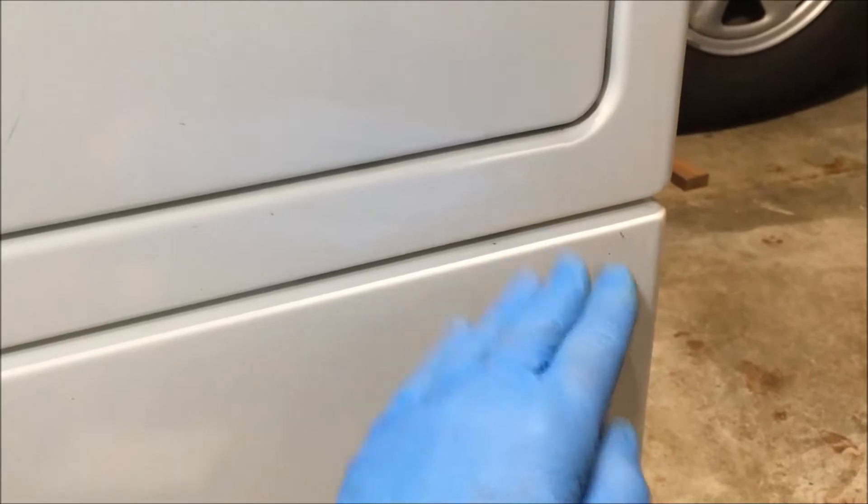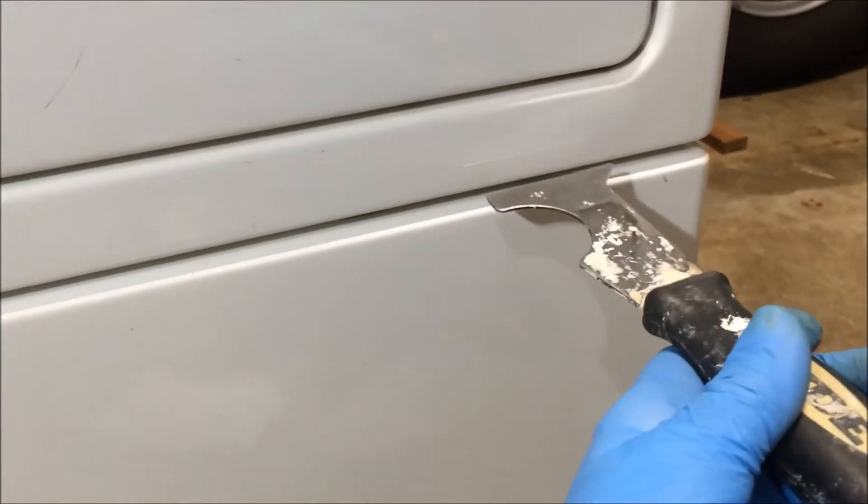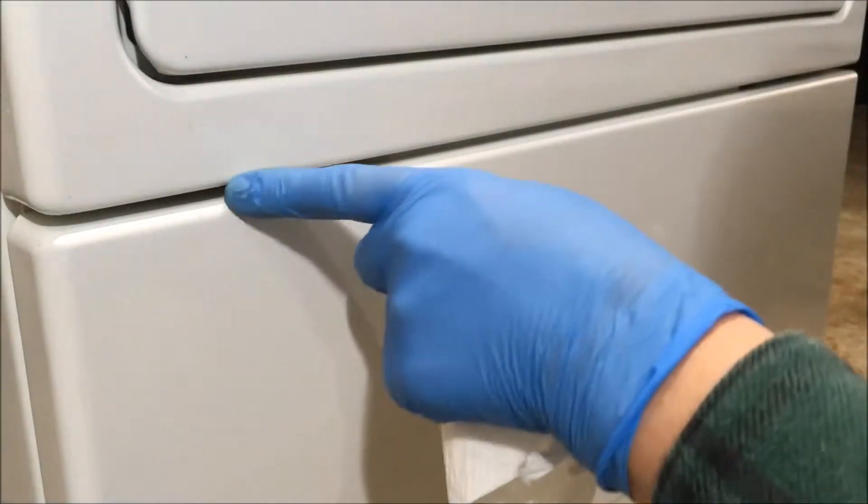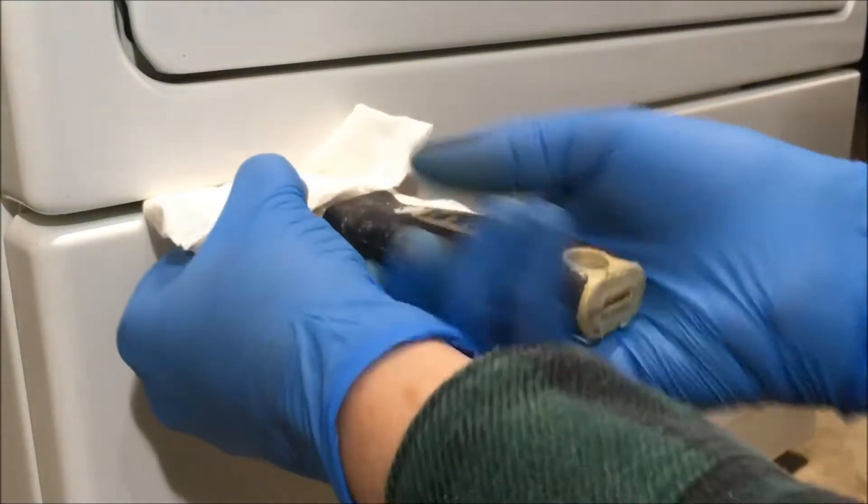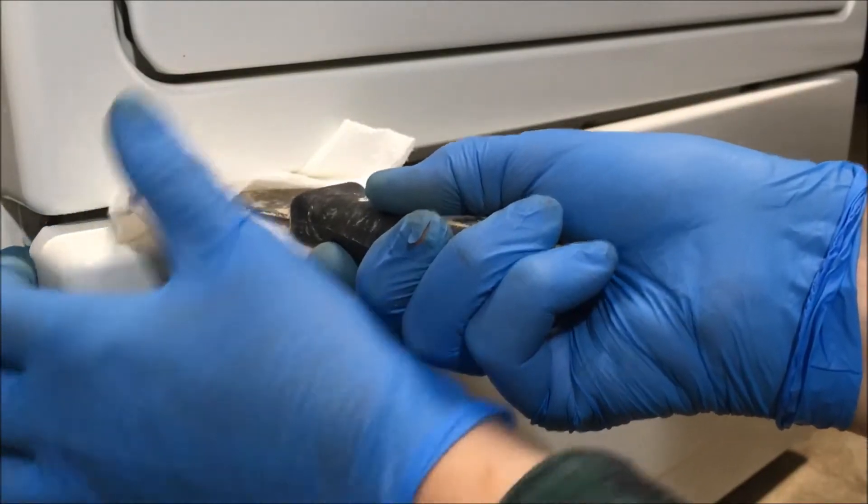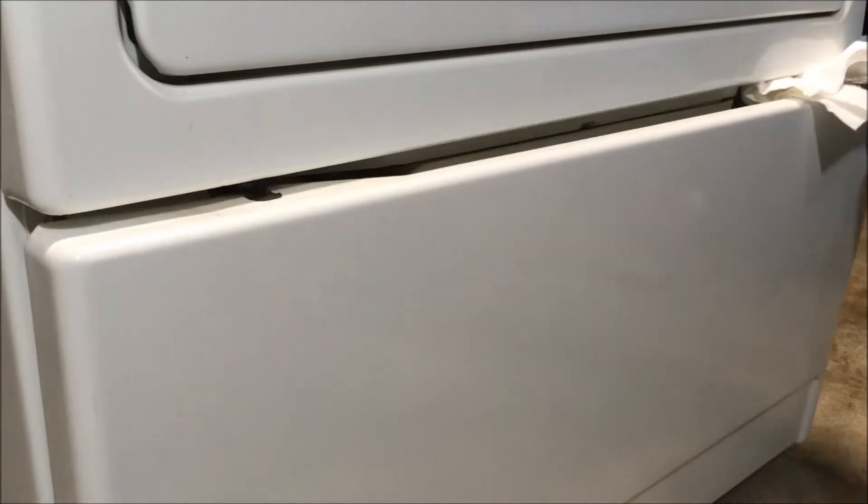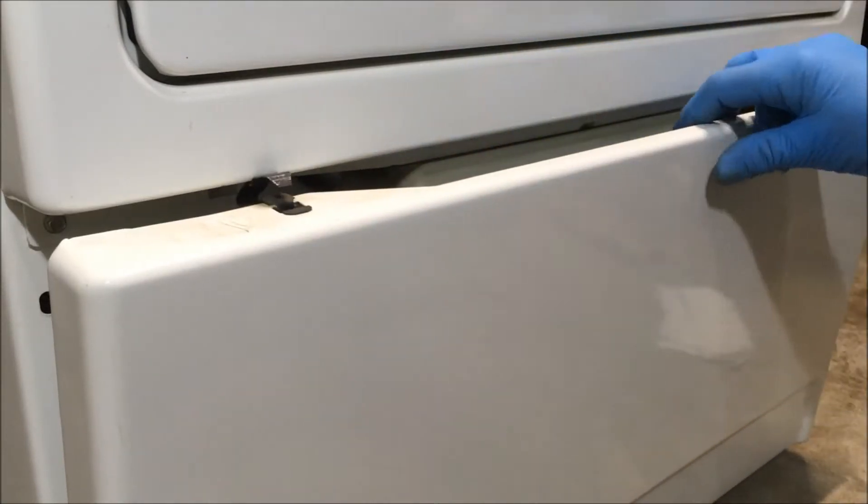I'm going to use a five in one tool, which is this, to push it in and release those clips. I use a paper towel so I don't scratch the surface of the dryer. Push the five in one tool in, push it in, pull the panel forward. Now the panel comes up and off.